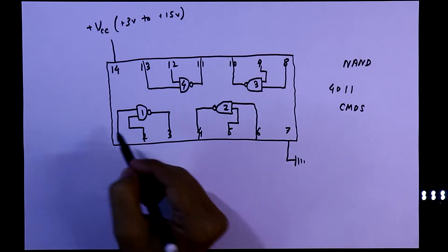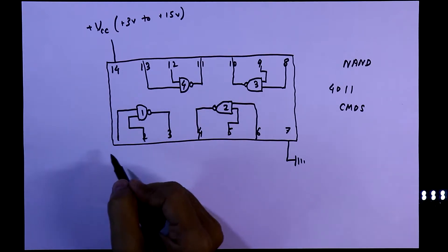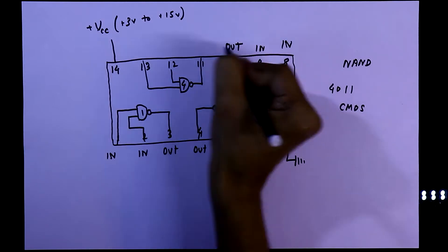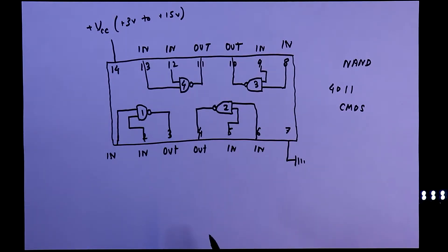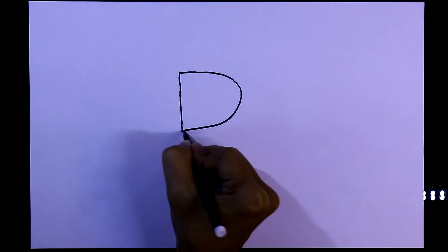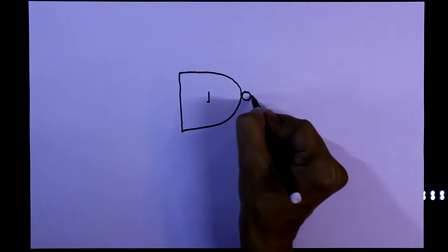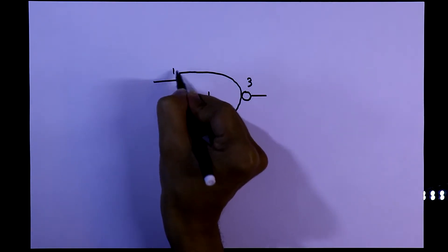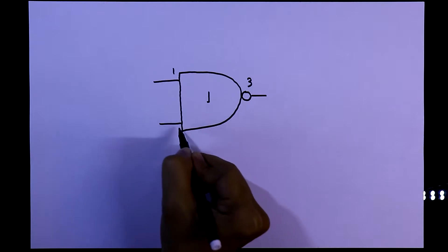In the breadboard we will see only gate number 1. Now we will see the connection in the breadboard. This is gate number 1. So its output will be pin number 3, and both the inputs are pin number 1 and pin number 2.